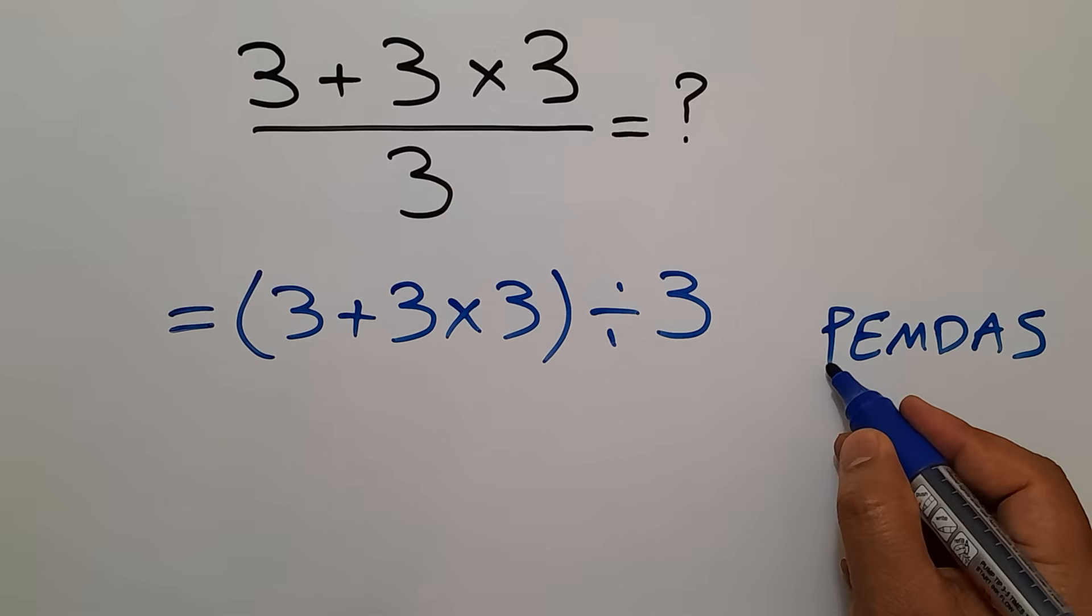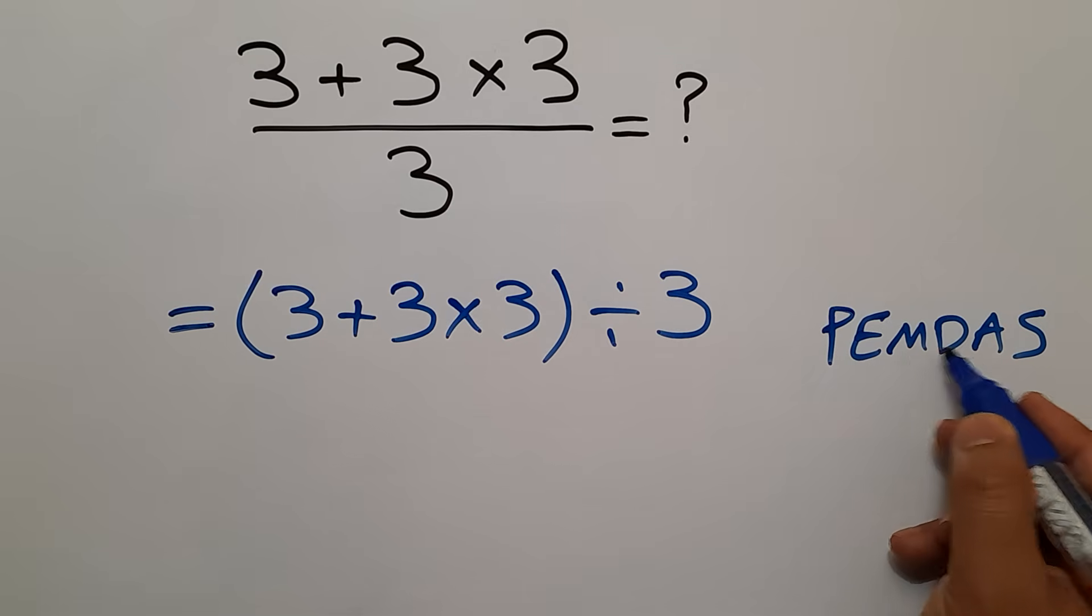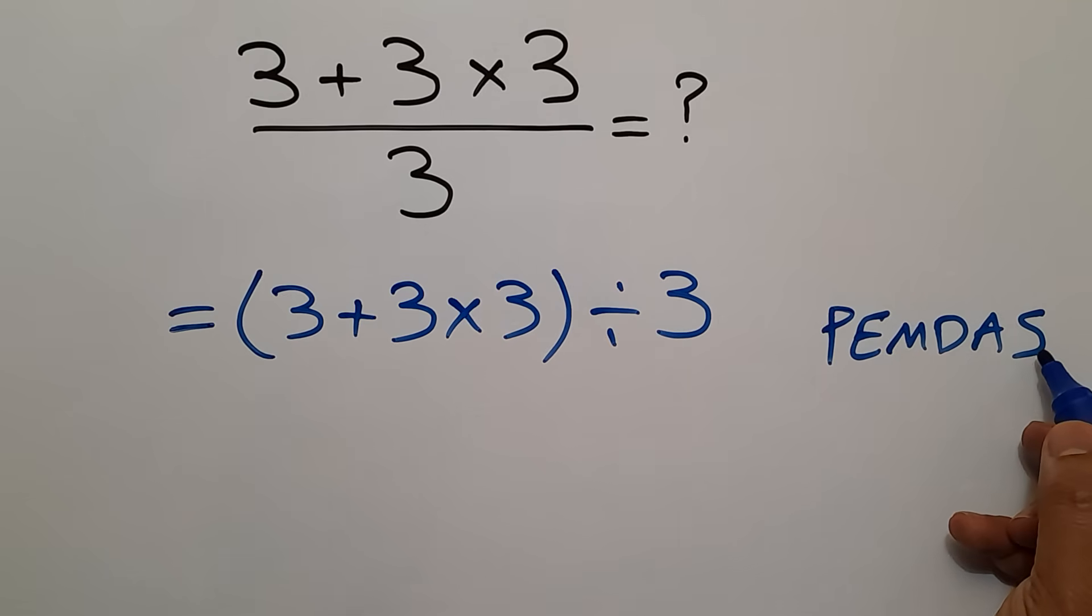P stands for parentheses, E stands for exponents, M and D stands for multiplication and division, and A and S stands for addition and subtraction.